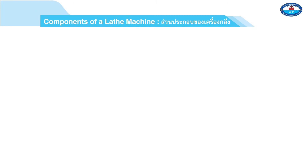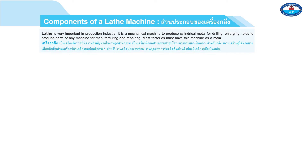Page 150: Components of a lathe machine. The lathe is a very important machine in the production industry. It is a mechanical machine used to produce cylindrical metal, for drilling and enlarging holes, and to produce parts of any machine for manufacturing and repairing.